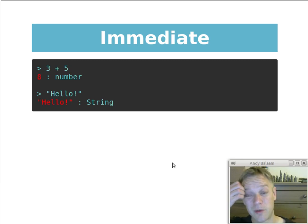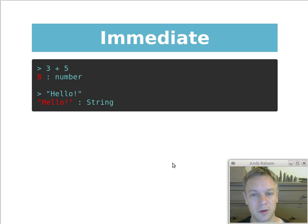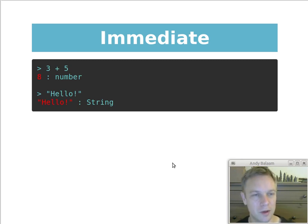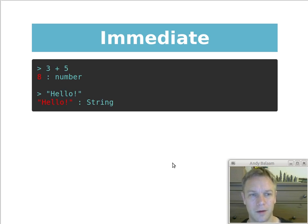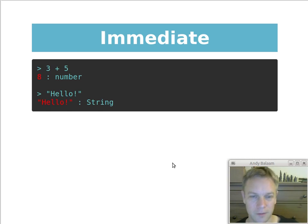Another way in which it's immediate is it has an interactive environment. If you just type 'elm repl' once you've got Elm installed, you get a little interactive environment — traditionally called a REPL — where you can type stuff in and see what it does. So you can type in three plus five and get the answer eight, and it tells you what type of thing it is — a number. Or you can type in a string 'hello' and it'll tell you yes, this is a string.